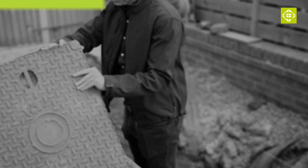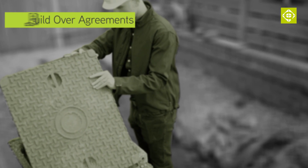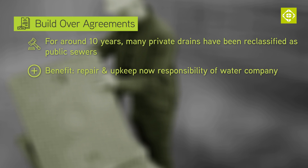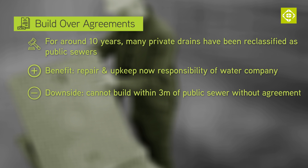For around ten years now, drainage pipes that serve multiple users — previously classed as private drains — are now often classed as public sewers. The upside to this is that the responsibility for repair and upkeep is transferred to the public ownership of the water company. The downside is that you cannot just go straight ahead and build over or within three meters of a public sewer.